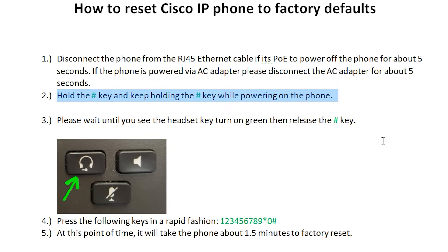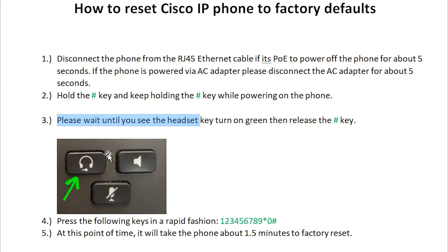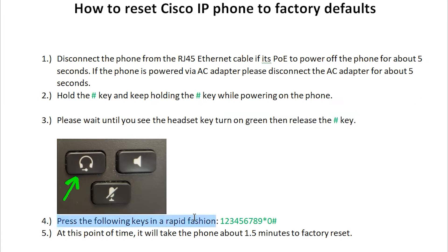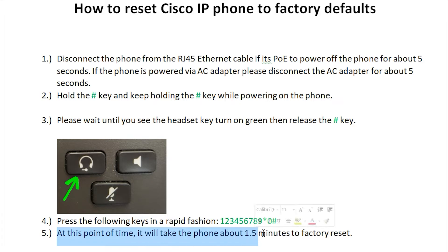While holding down the hash key, we're going to wait until the headset key — as shown in the illustration — turns on green. Then we're going to right away release the hash key, and in a rapid fashion type in 123456789*0#. At this point the phone should initiate the factory reset, which takes about 1.5 minutes to complete.